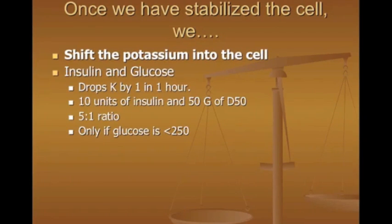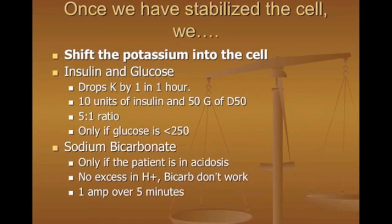After stabilizing the cell with calcium, shift the potassium into the cell by giving insulin and glucose simultaneously. This drops potassium by about one millimole per liter in one hour. Give 10 units of insulin and 50 grams of D50 at a five-to-one ratio. If your patient is hyperglycemic or their sugar is over 250, you don't have to give D50 — they already have enough free sugar. Under 250, give two amps of D50 with 10 units of insulin.